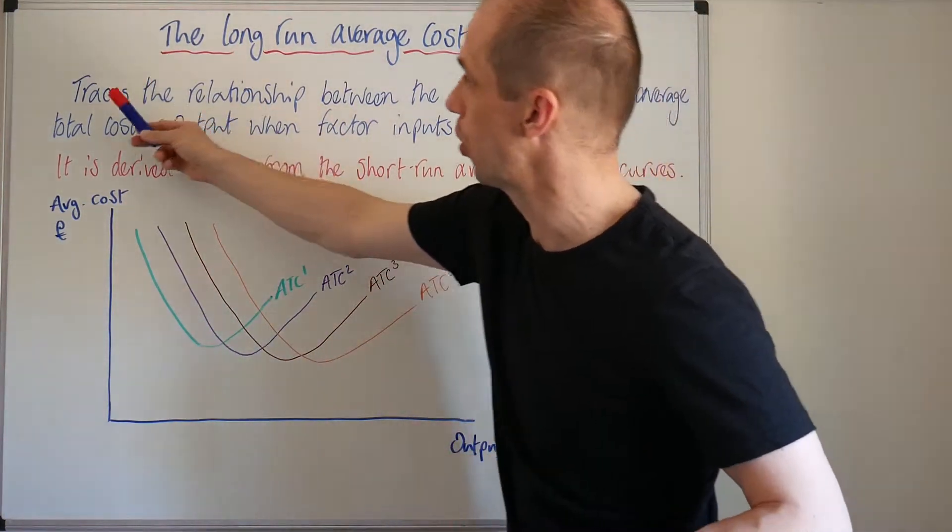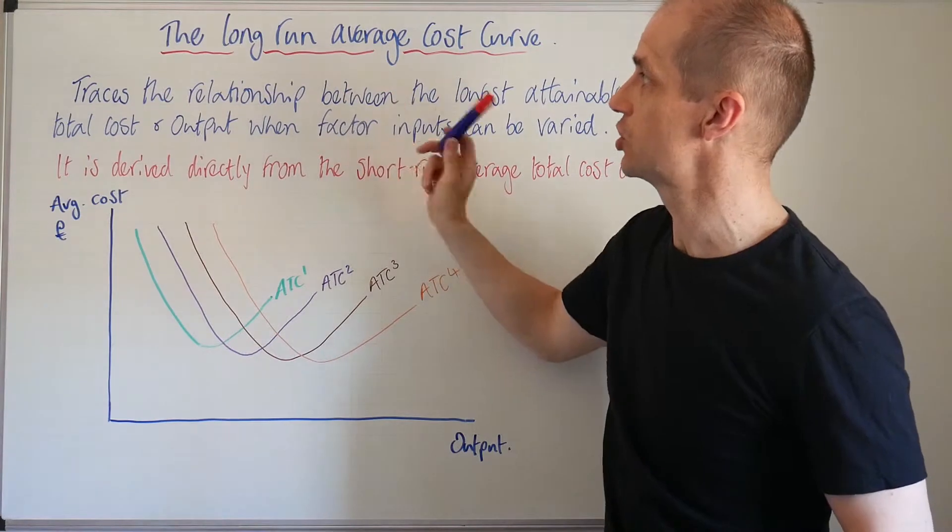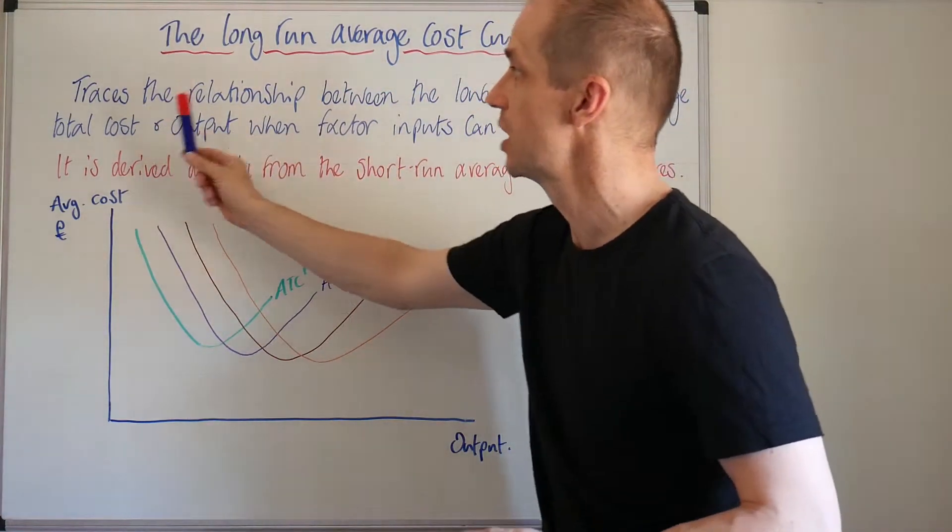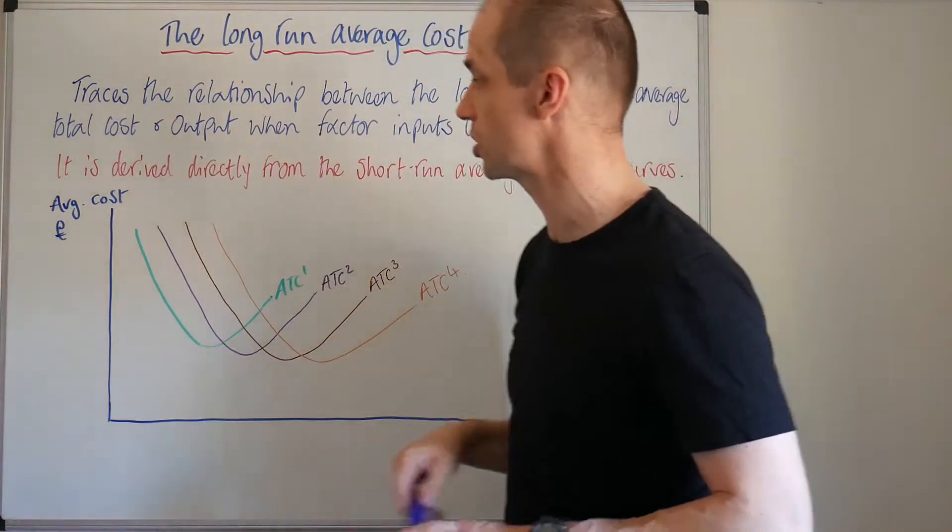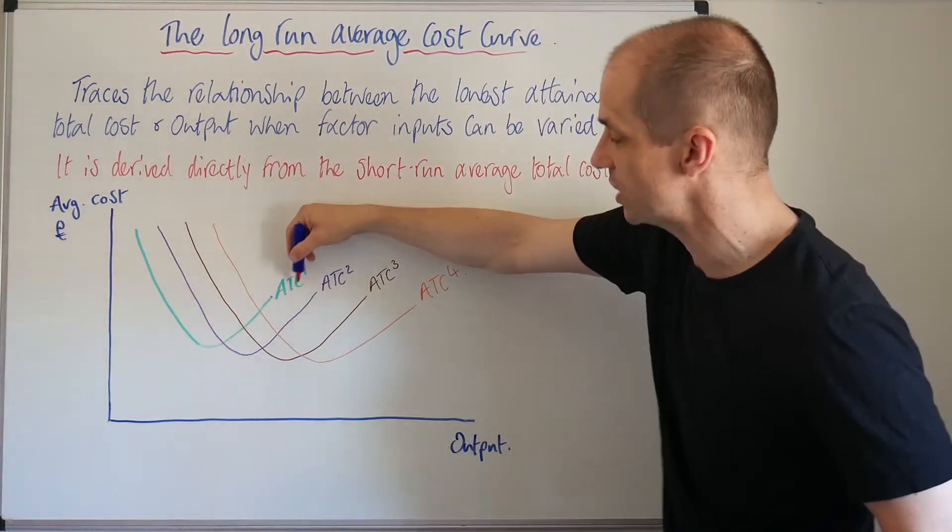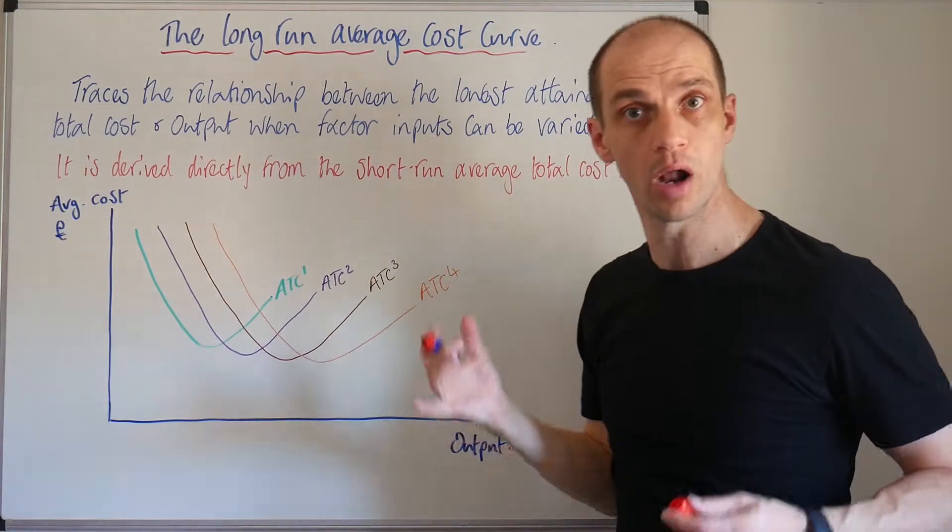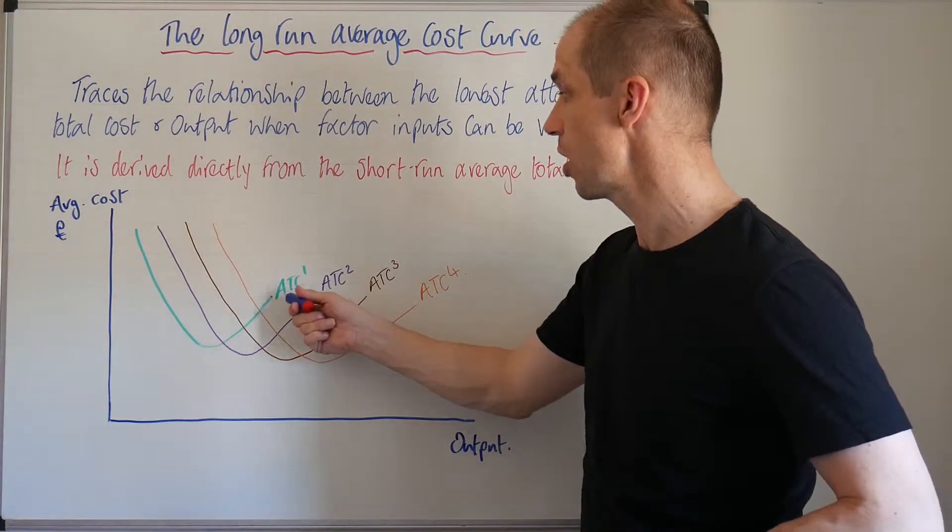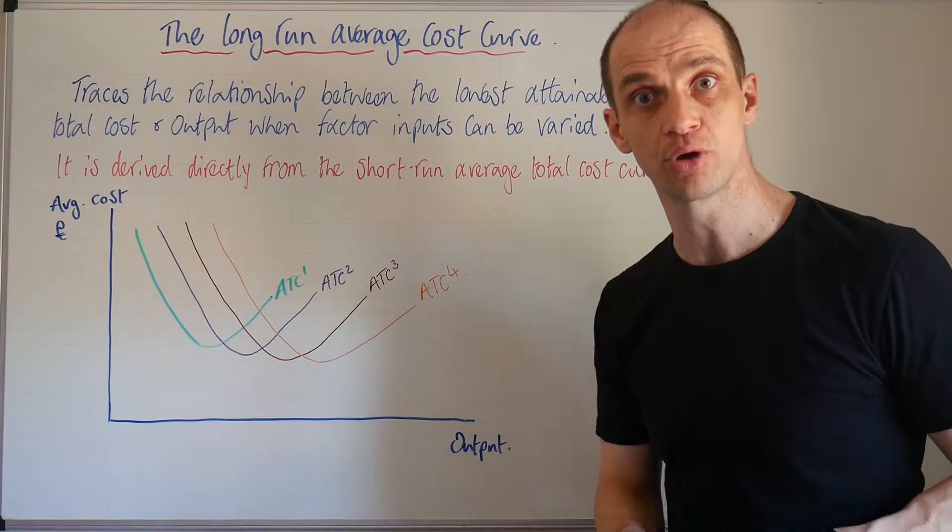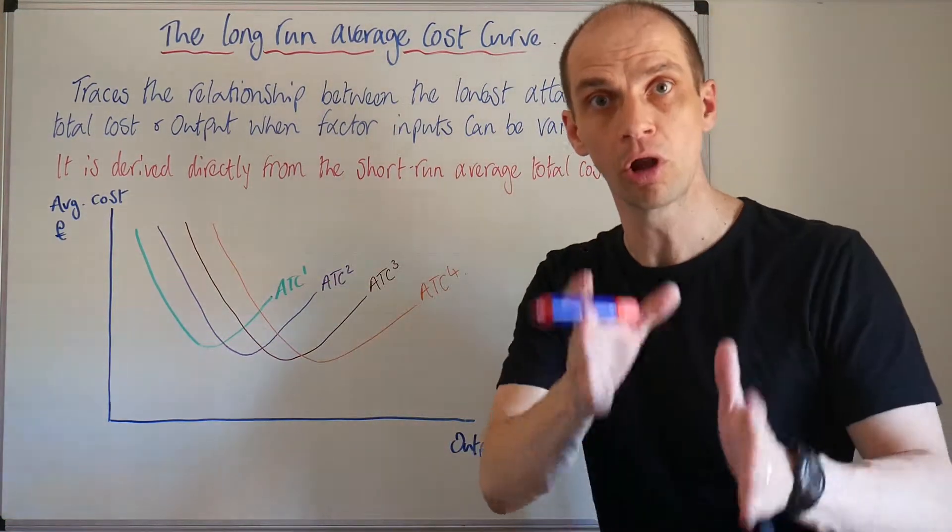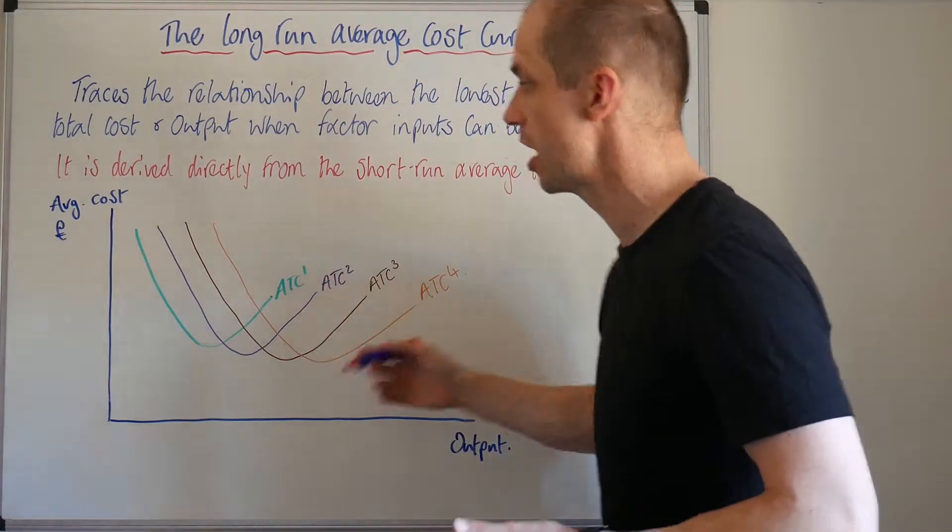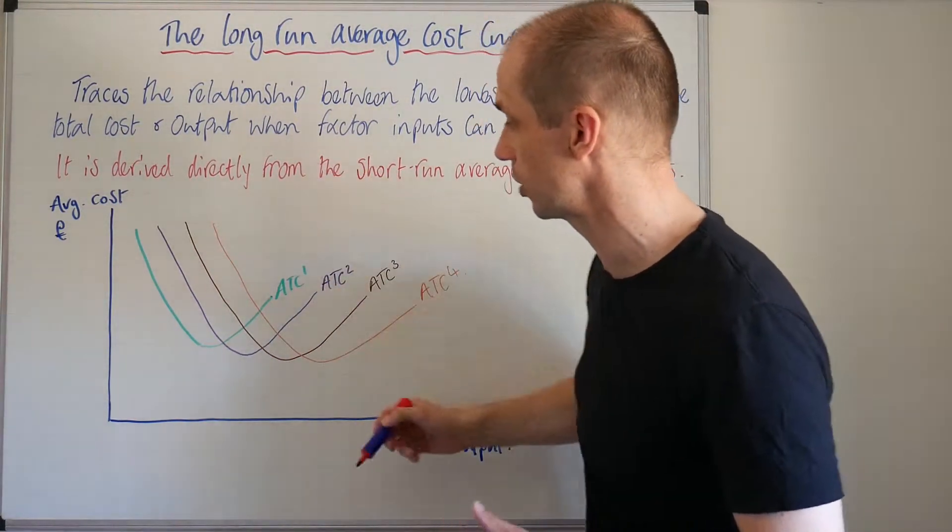Going back to our definition of the long run average total cost curve, it traces that relationship between the lowest attainable average total cost. Each of these represents a short run average total cost where one factor of production was fixed - the actual plant and therefore the capital good or machine being utilised.